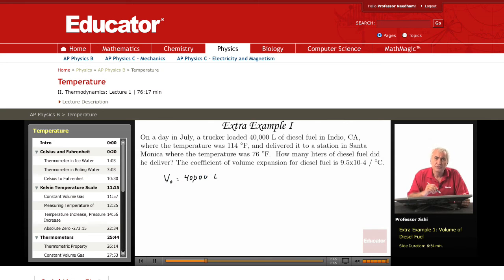This was at the temperature of 114. They were delivered at the temperature of 76, so now the temperature has declined. There were 40,000 liters at a given temperature. Now we are at a different temperature, so the volume changes. In fact, there will be a contraction.